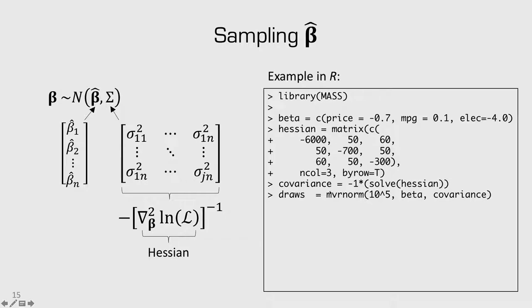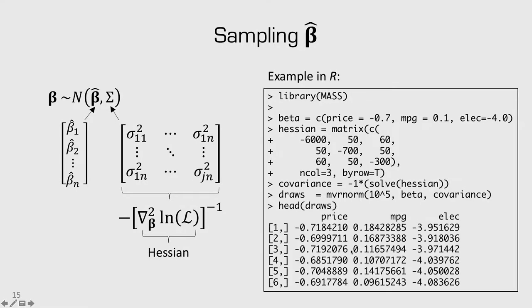MVRnorm comes from the mass library and it takes a vector of means and a covariance matrix. If I were to look at the first six rows of my draws, I can see that for each of these attributes, I've got a bunch of different possible values,